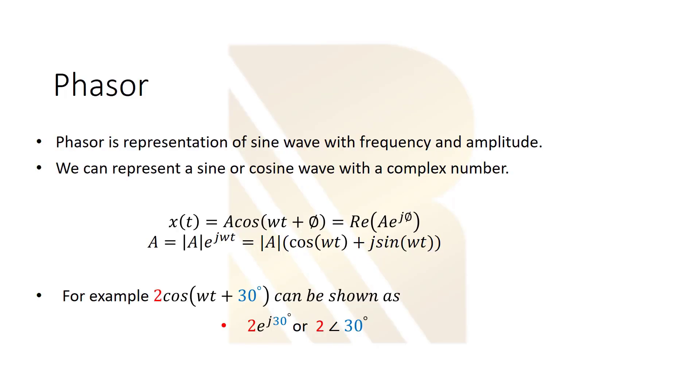What is phasor? It's a representation of a sine wave with frequency and amplitude. We can represent a sine or cosine wave with a complex number. So actually it's very simple when we have a wave. Let's say A cosine(ωt + φ). This is the amplitude. A is amplitude and φ is the phase of this wave.